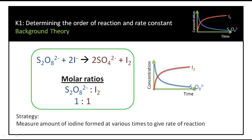In measuring the rate of reaction, what we need to do is measure how fast either products are formed or reactants are consumed. The strategy here is to measure the amount of iodine formed at various times, which will give us the rate of reaction. We choose iodine because it can be measured quite easily. An important point to note is that the molar ratio of persulfate to iodine is 1:1.